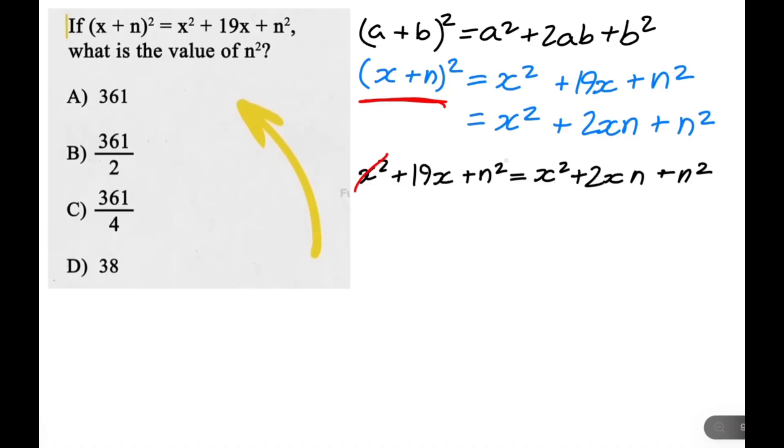And now we can subtract x squared and n squared from both sides of the equation. So we'll just get rid of this, this, this, and this, subtracting x squared and n squared from both sides of the equation. And then we just get 19x is equal to 2xn.